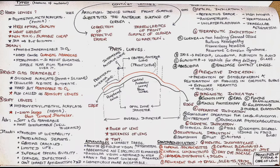In this video we are going to see about contact lenses. Contact lenses are an artificial device whose front surface substitutes the anterior surface of the cornea. Contact lenses cover just in front of the anterior surface of the cornea. We use contact lenses to correct refractive error and to correct the irregularities of the front surface of the cornea.